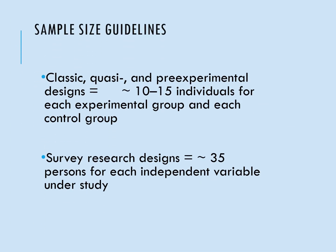There are some normal sample size guidelines for each type of design. For classic, quasi-experimental, or pre-experimental designs, we want 10 to 15 individuals for each experimental group and each control group. So if we have an experimental group and a control group, we're looking at 20 to 30 individuals minimum. Where we don't have a control group and just have an experimental group, we're looking at 10 to 15 people per group.